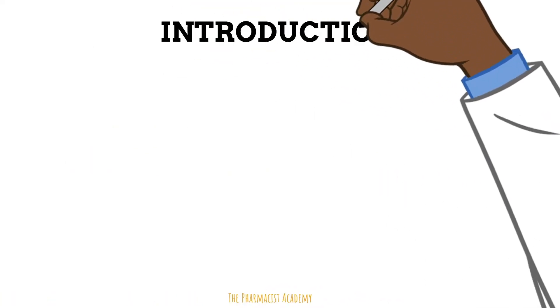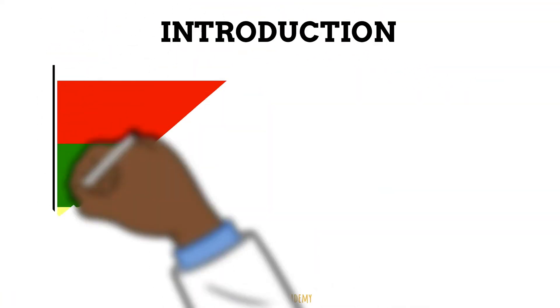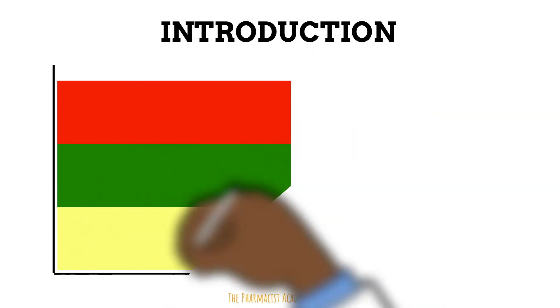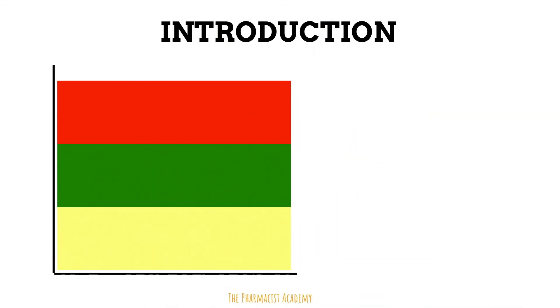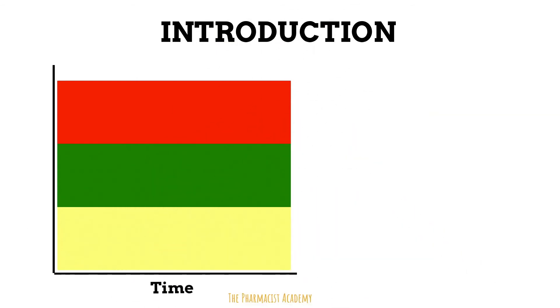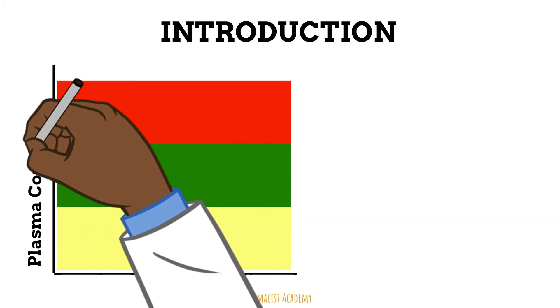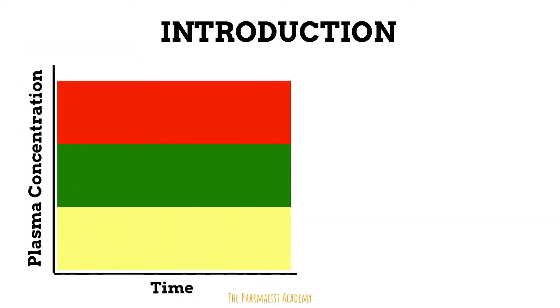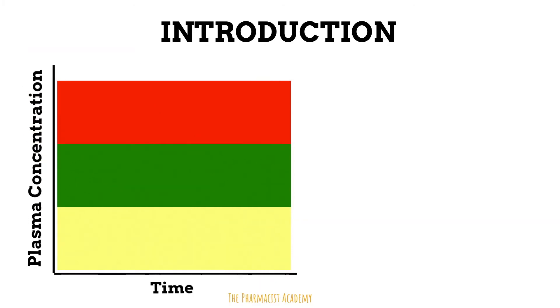Let's look at this differently for the visual learners. So let's take a look at this diagram here. On the x-axis, we have the time, but don't focus too much on the time. On the y-axis, we have the plasma concentration.